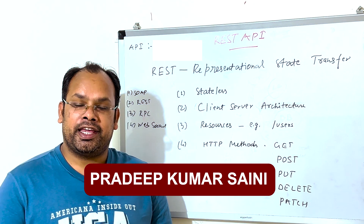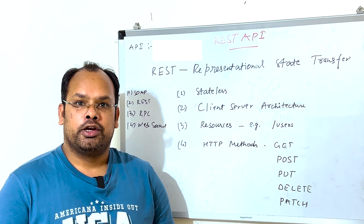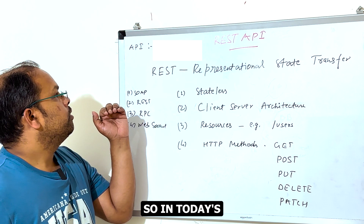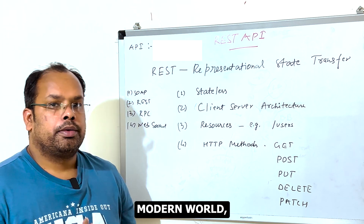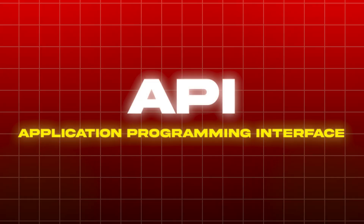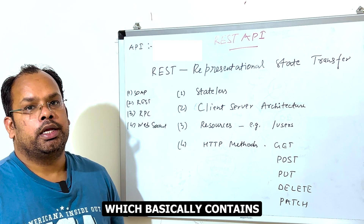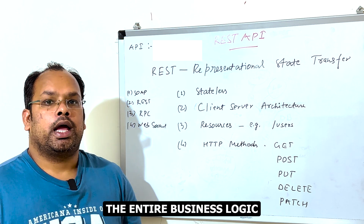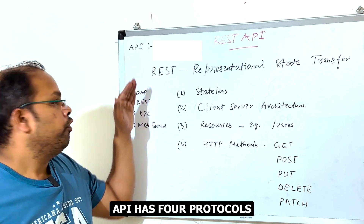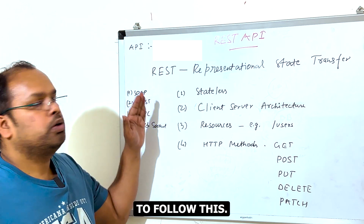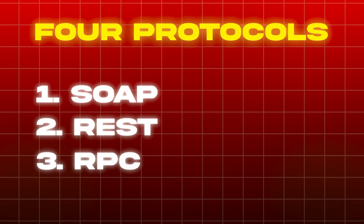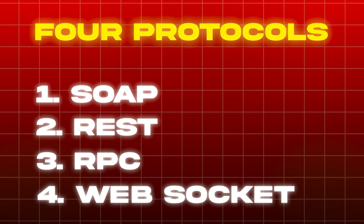Hello guys, this is PKS, welcome to my channel. Today we are going to discuss about REST API. In today's modern world, basically back-end provides APIs to front-end. API has four protocols: number one is SOAP, number two is REST, number three is RPC, and number four is WebSocket.